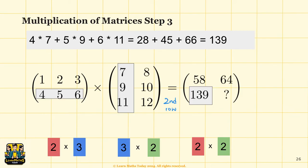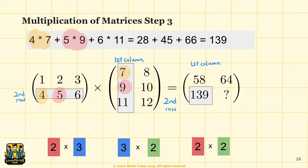Now we move on to the second row, first column of the new matrix. Since this is the second row, we use the second row of matrix A — 4, 5, 6 — and the first column of matrix B — 7, 9, 11. Multiply: 4×7 + 5×9 + 6×11, and you get 139.